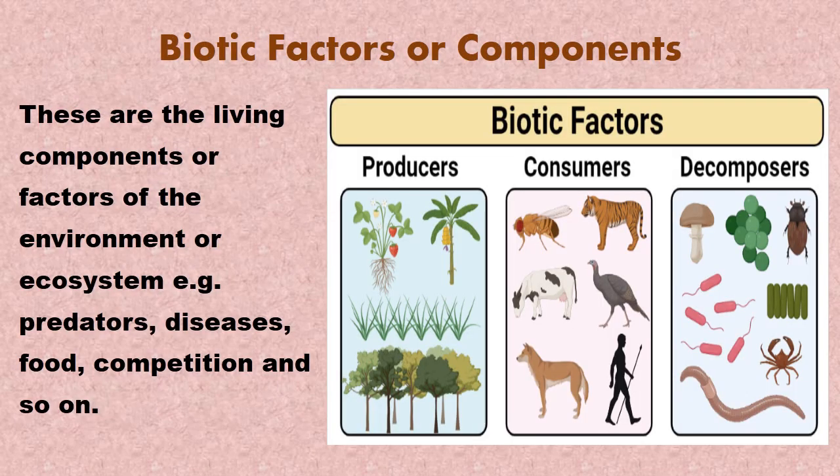We'll now look at the factors or components that make up the ecosystem. There are two components: the biotic and abiotic components. The biotic factors are the living components of the ecosystem. These include the producers, which are the plants; the consumers, which are the animals; and the decomposers, which are the microorganisms.